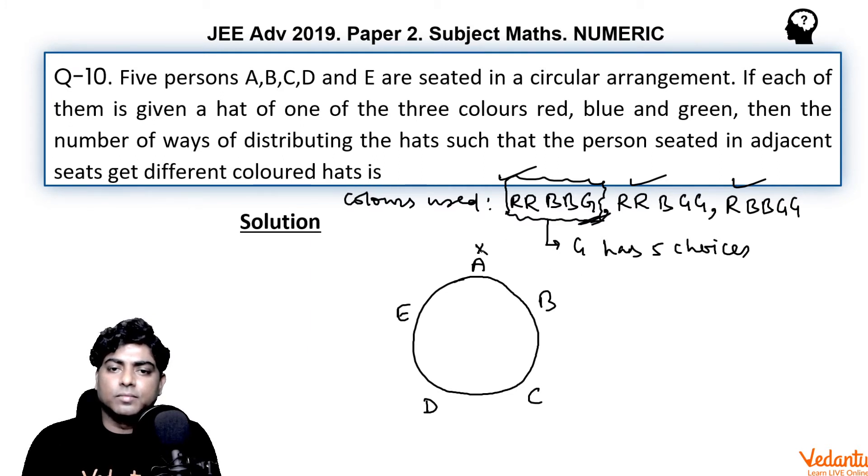For green we have five choices. Suppose green goes to A. Green is there, now for remaining four persons we have four hats - two red, two blue - but two consecutive persons cannot get the same color.